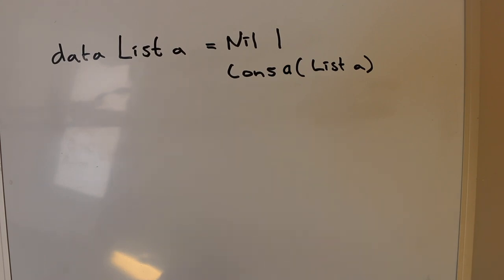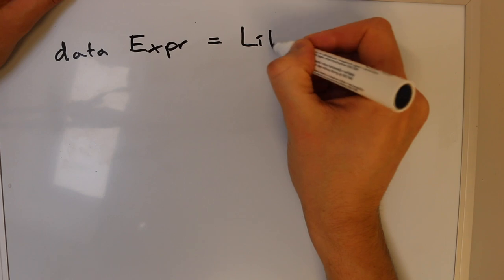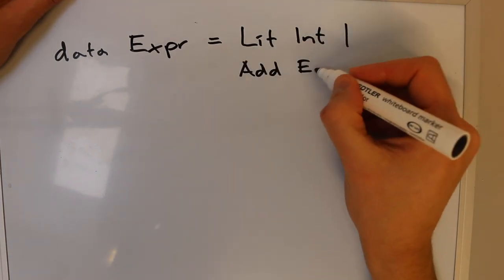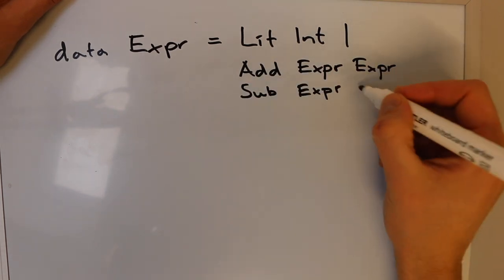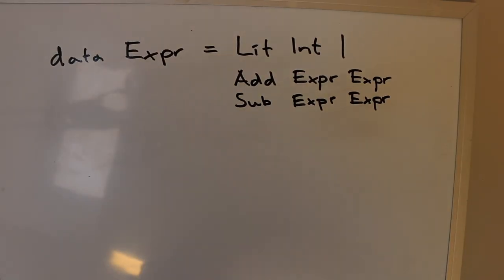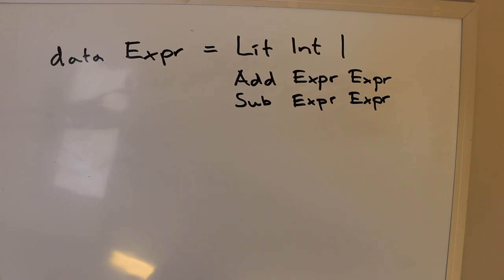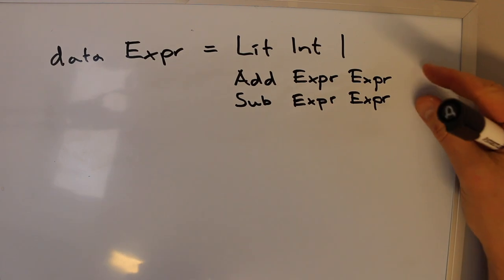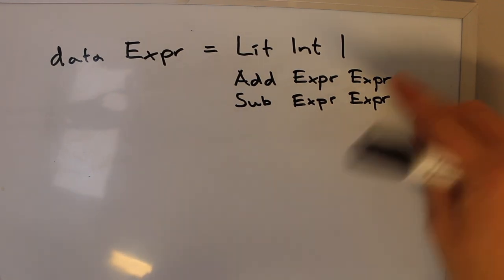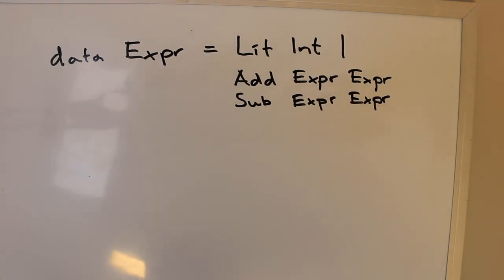As a second example of a recursively defined data type, let's define a small expression language. In this language, an expression is either a Lit with an integer field, an Add of two further expressions, or a Sub of two further expressions. This data type's definition suggests certain semantics — add and sub suggest addition and subtraction — though just defining the data type doesn't introduce those semantics yet. It is recursive because for the Add and Sub cases the fields are again Expr, the same type being defined.